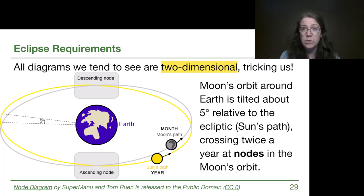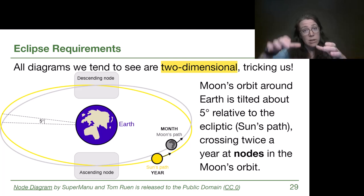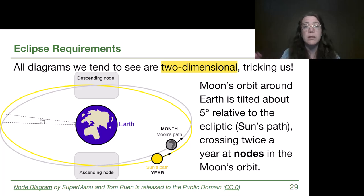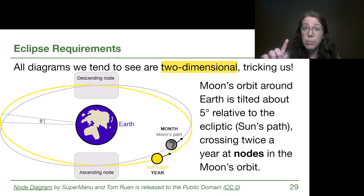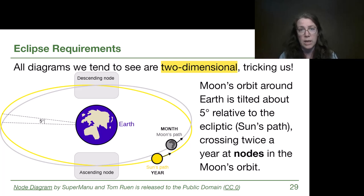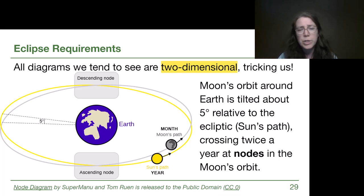Really important for our understanding of this topic is the realization that the Moon's orbit around the Earth is tilted about five degrees with respect to the Earth's orbit around the Sun, which means it's five degrees offset from the ecliptic — the path that the Sun appears to make through our sky. These two paths cross twice a year at what are called nodes, an ascending node and a descending node. We just need to keep in mind that nodes are important to eclipses.